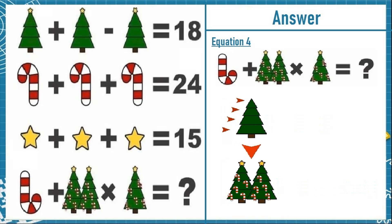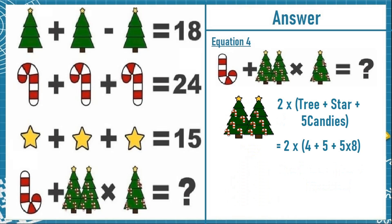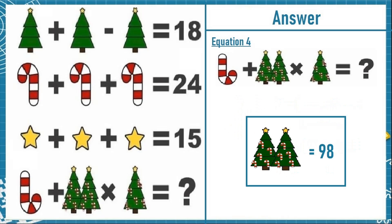Now looking at the trees in equation 4 — they are not similar to those in equation 1. They have more levels. The tree in equation 1 has 3 levels and equals 3, but the trees in equation 4 have 4 levels, so they equal 4. They also have a star on top and 5 candies. So the value becomes 2 times (star + 4 + 5 × 8), which is 2 times (5 + 4 + 40), giving 2 times 49, which equals 98.